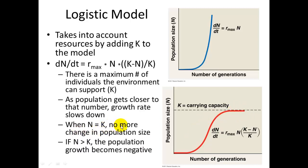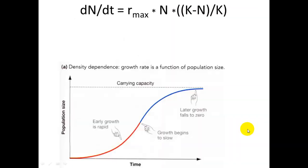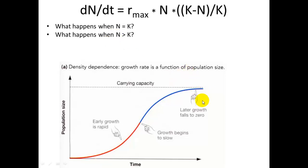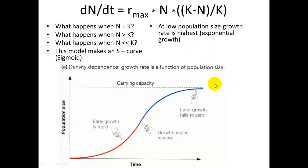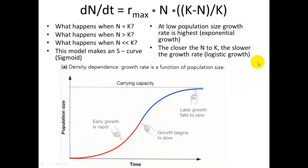When N equals K, r is zero. If N is greater than K and we overshoot, the population will decrease. When N is much lower than K, you get the J-shaped exponential growth. This produces the sigmoidal curve — at low population size you get exponential growth, but the closer you get to K, the lower the growth rate, and it levels off and remains somewhat stable around carrying capacity.